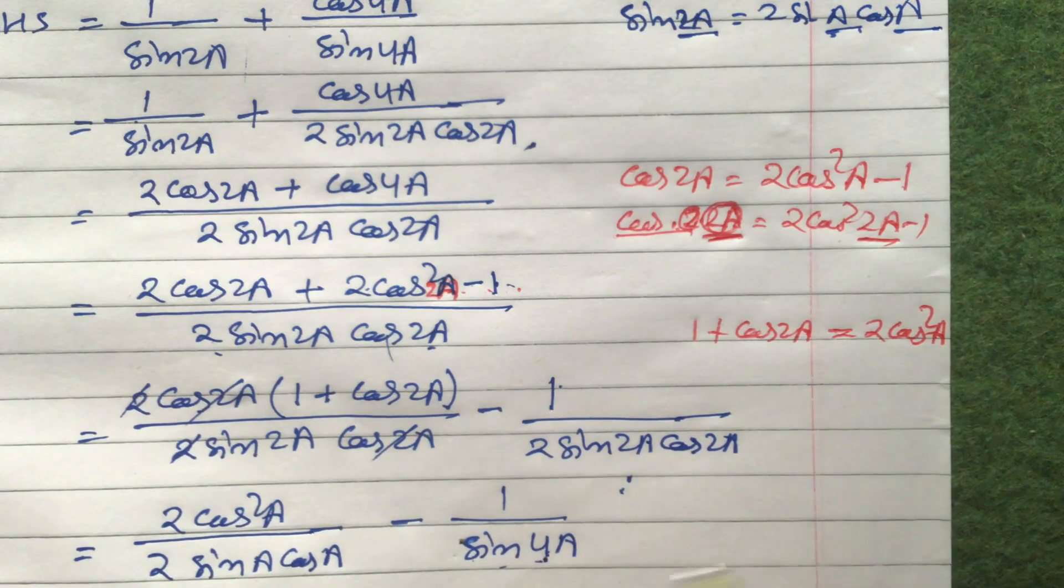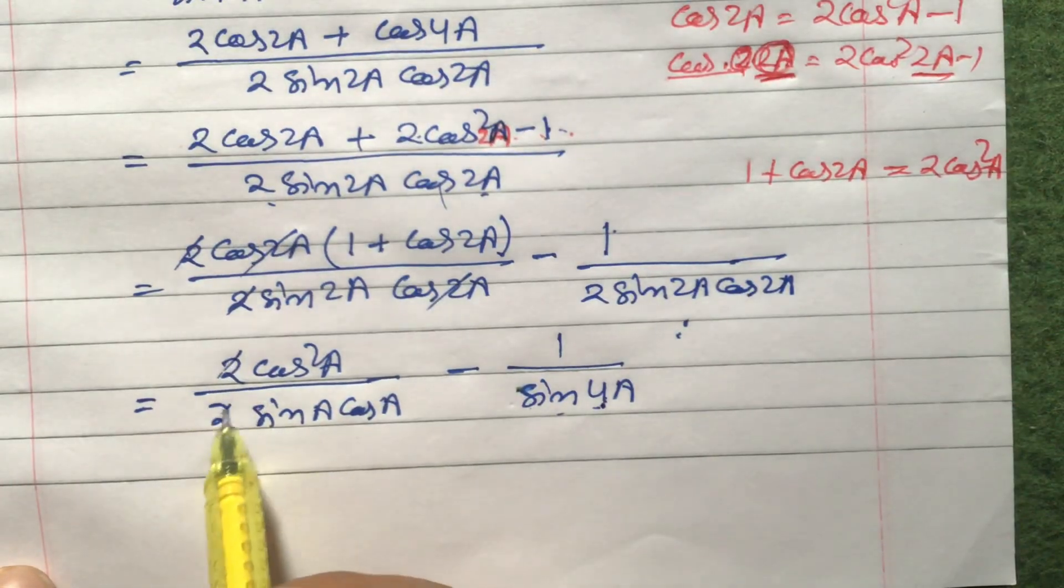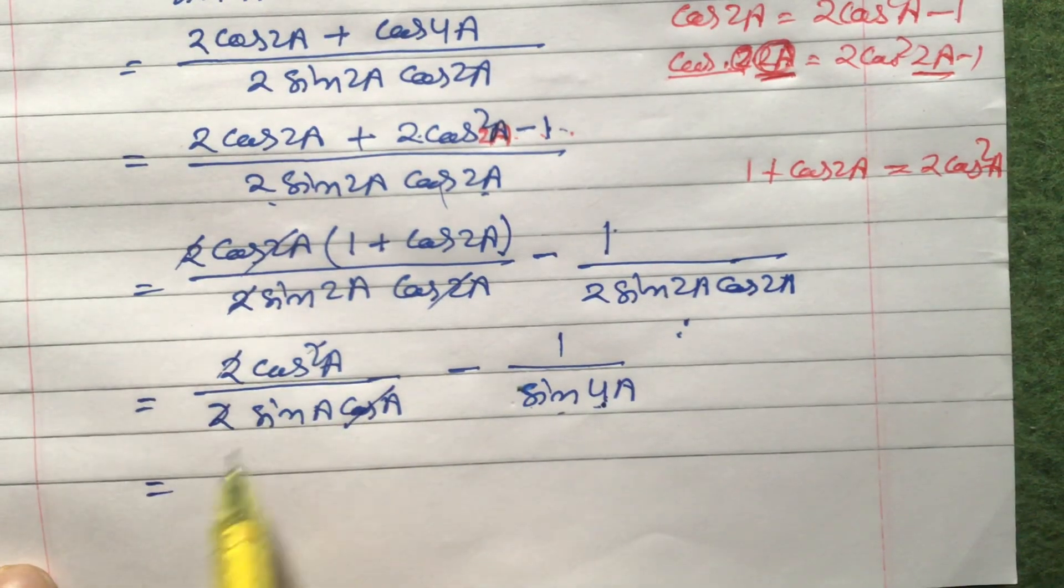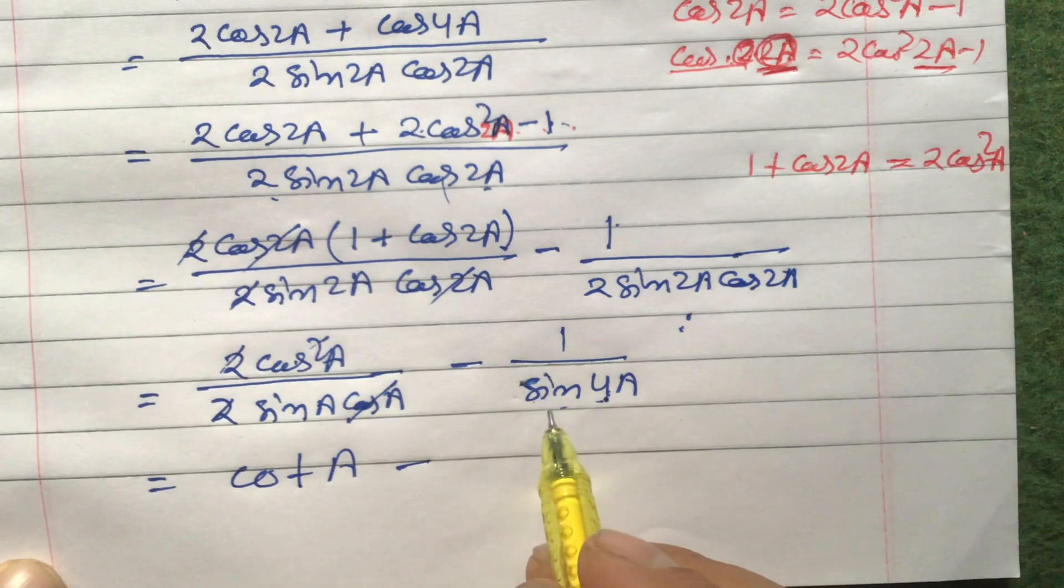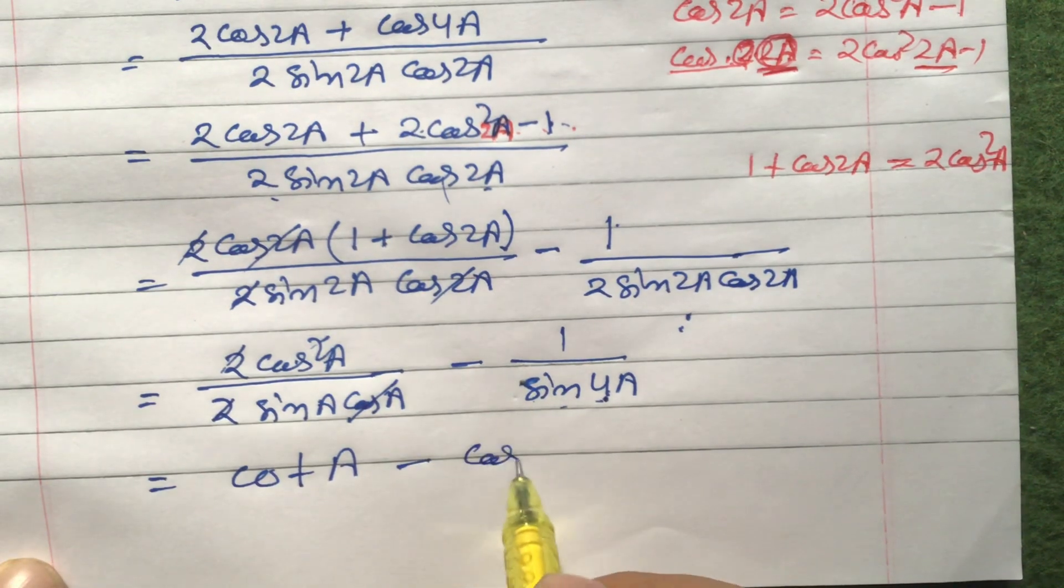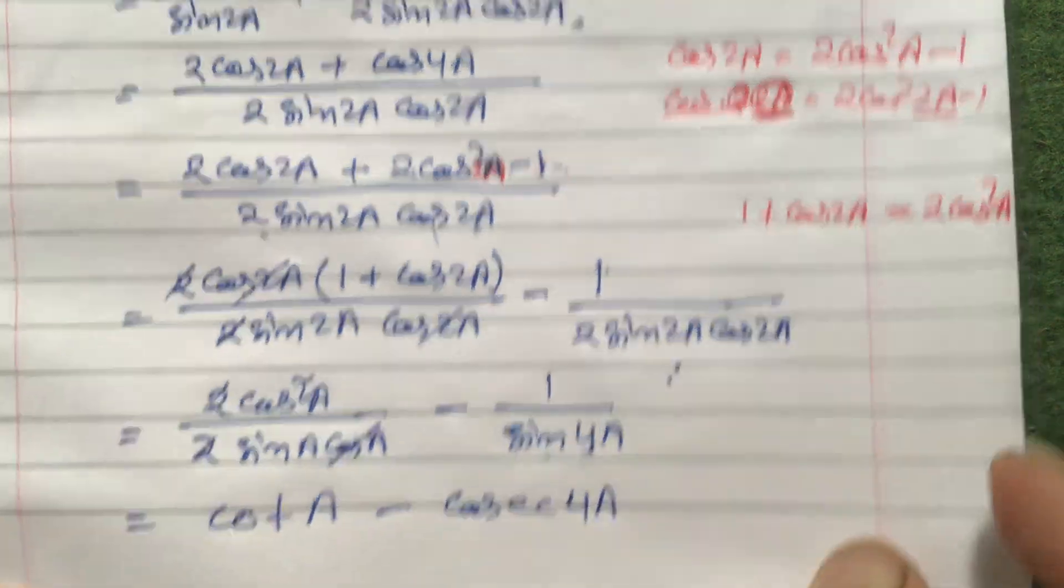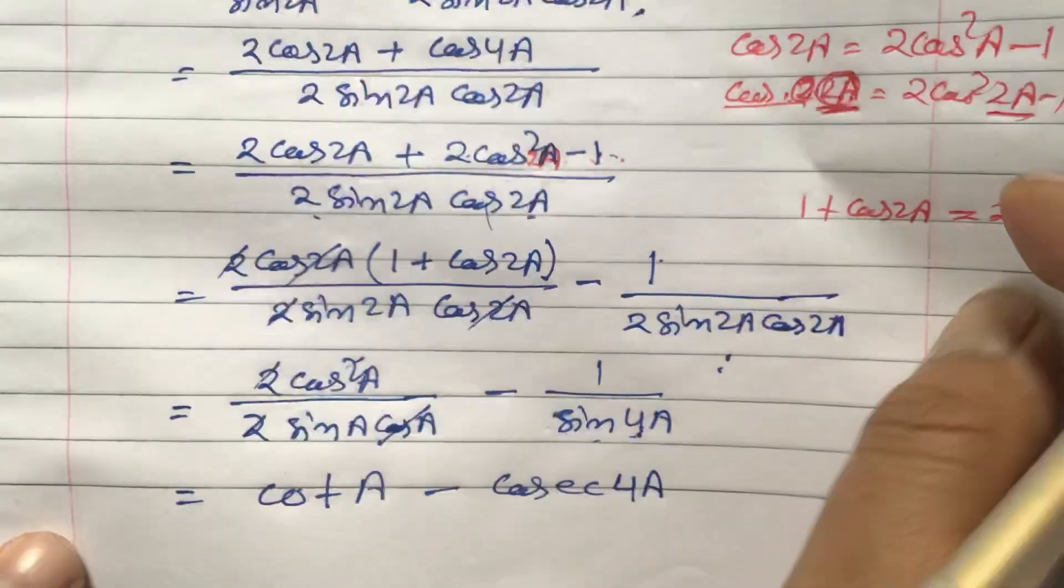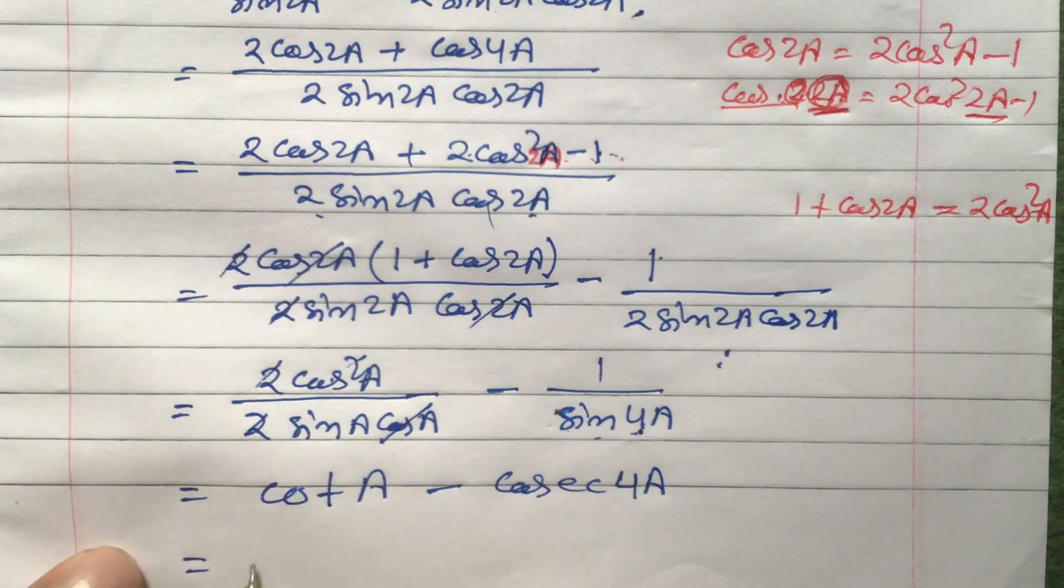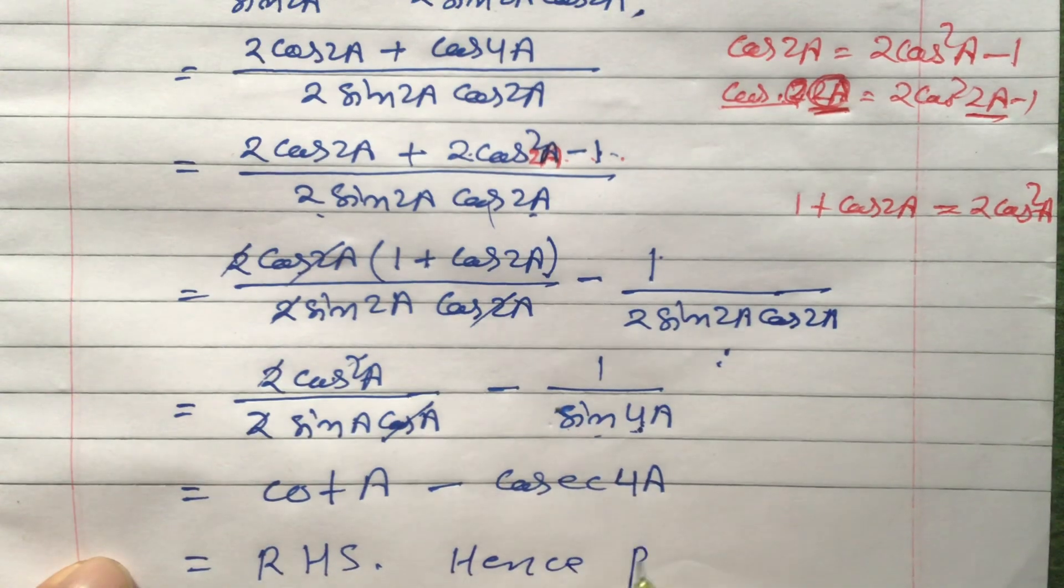Now here, it's like this. Now we can cancel this one, see. 2 and 2 cancel. This cos and square cancel. So we have got cos upon sin is cot. Cot a minus 1 by sin 4a is cot 4a. Look at here. Our RHS that only, see: cot a minus cot 4a. So this is RHS equals to RHS. Hence proved.